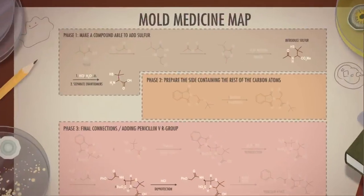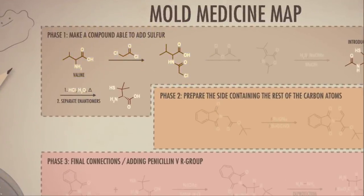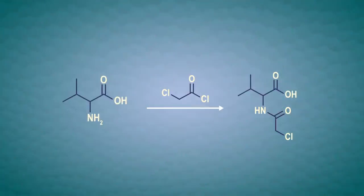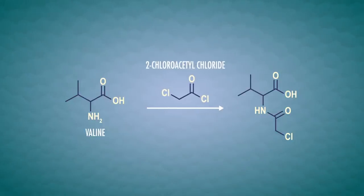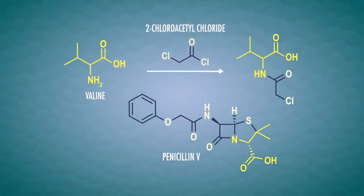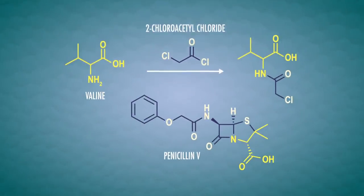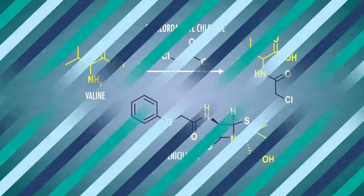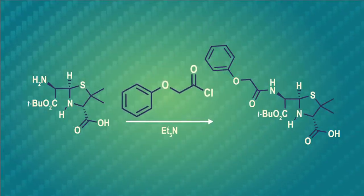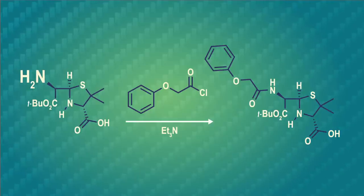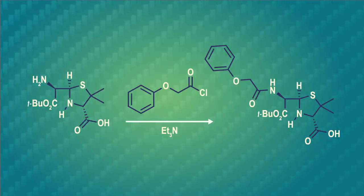Now we can fill in the very first stage in our mold medicine map – it's penicillin V synthesis time. Our map begins with valine, an essential amino acid. The primary amine group in valine is perfect for reaction with an acid chloride, in this case 2-chloroacetyl chloride. This reaction forms what will later become one corner of the four-membered beta-lactam ring, which is just a special type of cyclic amide structure in the penicillin structure. We also form another amide group a little further in the map, in a reaction between 2-phenoxyacetyl chloride and a primary amine group jutting off the structure formed to that point. You can see that this step gets us quite close to our final penicillin structure.